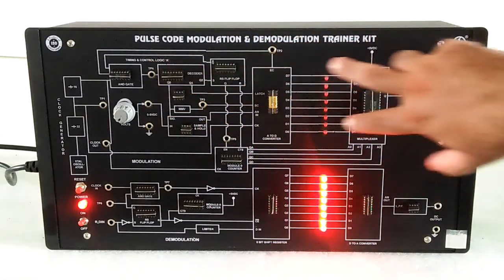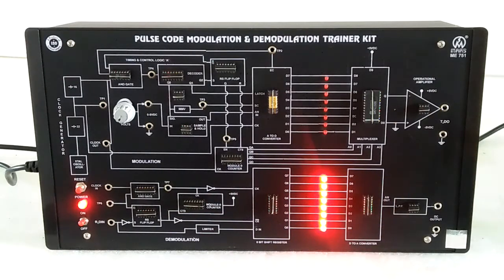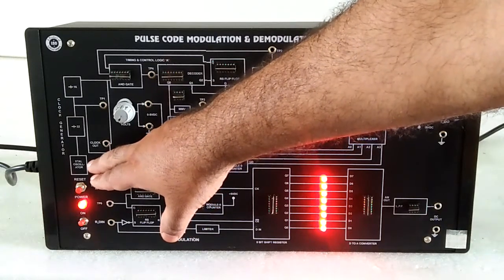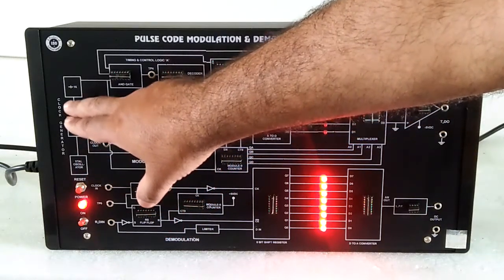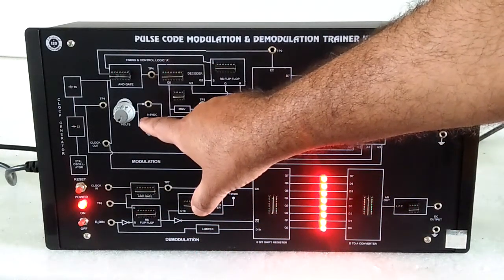The upper circuit is for modulation and the lower circuit is for demodulation. Here we use an external crystal for clock generation and 0 to 5 volt DC as a signal for changing into pulse code.